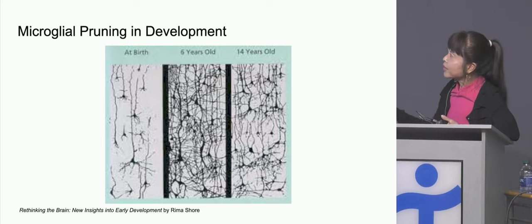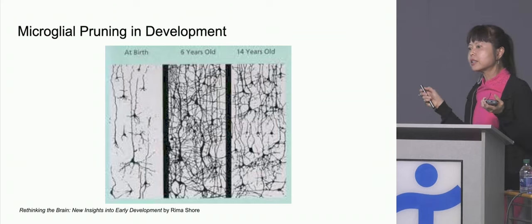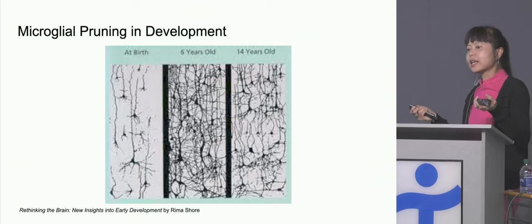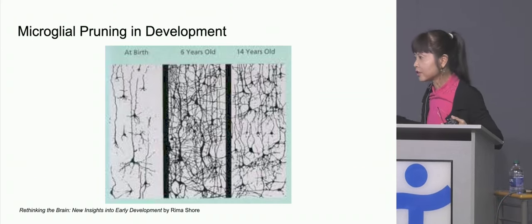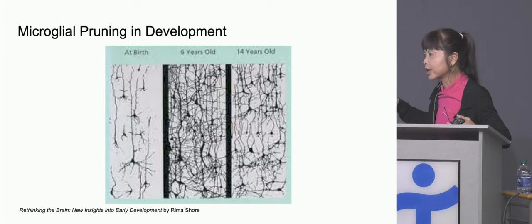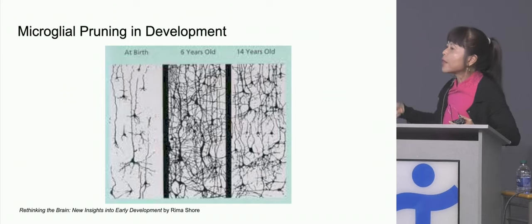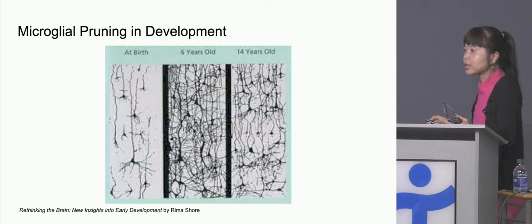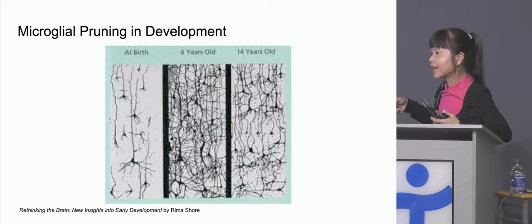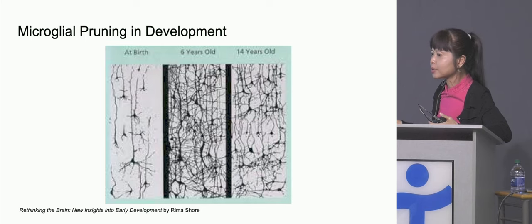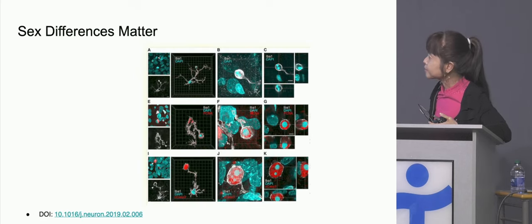What the microglia do is somehow detect the synapses that are not being used — the inactive ones — and get rid of those. They nibble away, eat them, and done. But the ones that we use frequently, they will actually support and consolidate. That's really what happens in pruning.